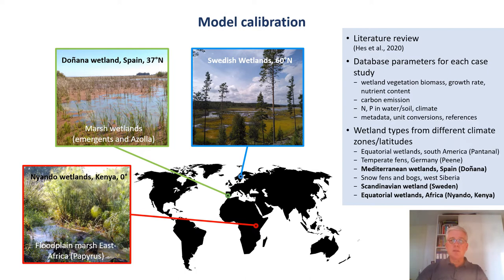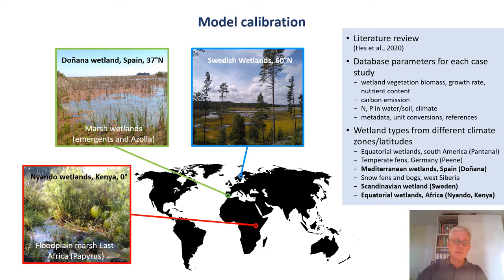To calibrate the model, we started reviewing the literature to compile data sets on different types of wetlands in widely varying climatic zones. These data sets form a database on vegetation biomass, growth rates, nutrient concentrations, nutrient content, carbon storage and emissions, and water quality, particularly of nutrients. We will use this database initially to calibrate the model, but once we have enough independent data, we can also use it for model validation. On the map, you can see the three wetlands in Sweden, Spain and Kenya, for which we can show some initial results.